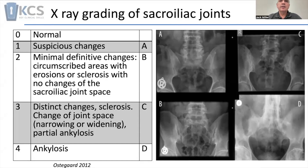Hello and welcome to KCS Monday Mover. This week we're going to look at grading of the sacroiliac joint. We've got at least four different levels of degenerative changes that we can see on plain film x-rays, particularly on the AP view of the SI joints.